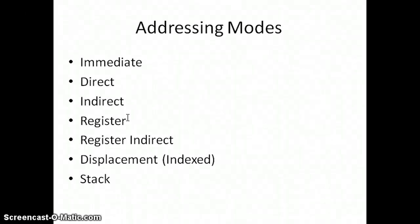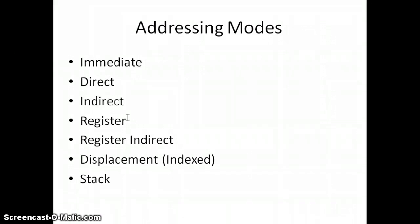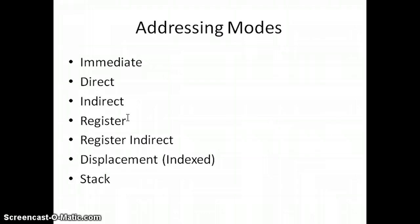The addressing modes are: Immediate, Direct, Indirect, Register, Register Indirect, Displacement or Index, and Stack. The way in which the data can be accessed — from memory, directly from a certain location, or using a specific value of a certain memory address — determines the addressing mode. The memory address locations can be given in terms of various operands.